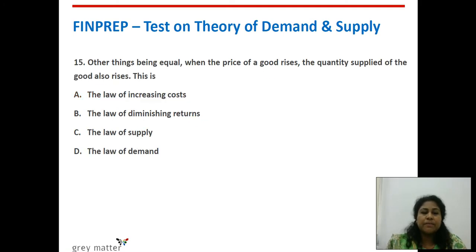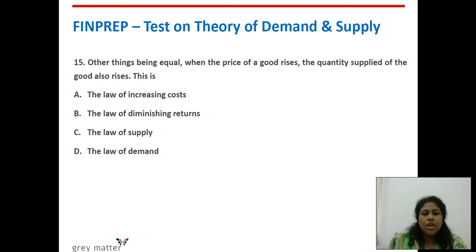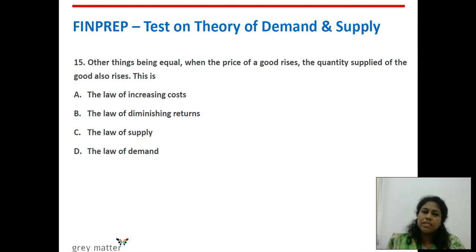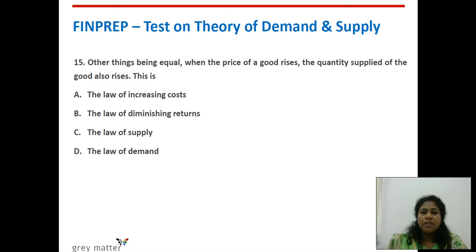Fifteenth question: other things being equal, when the price of a good rises, the quantity supplied of the good also rises. All other factors are held constant; price is increasing and quantity supplied is also increasing. This is called the law of supply because they move in the same direction.